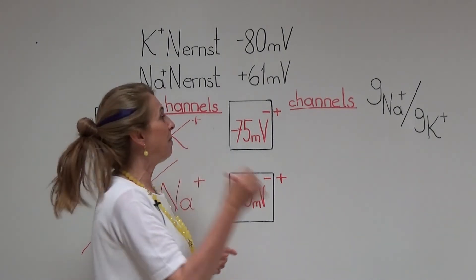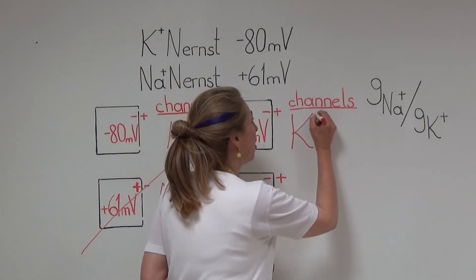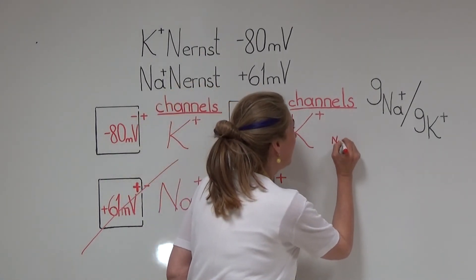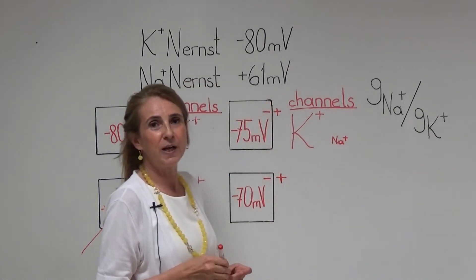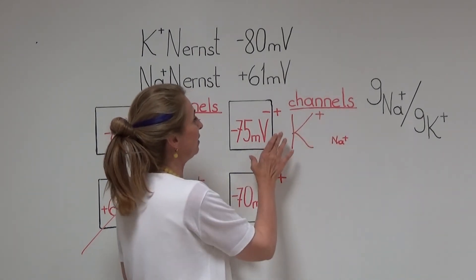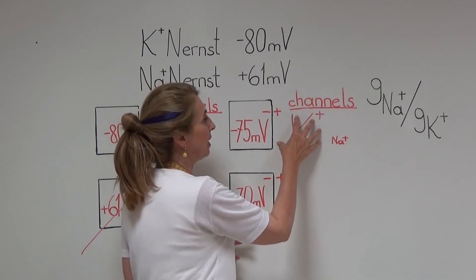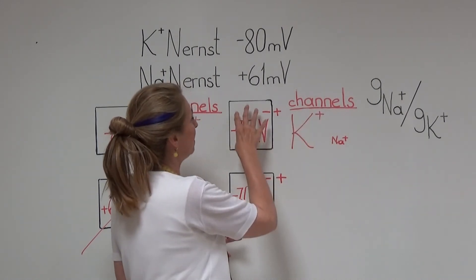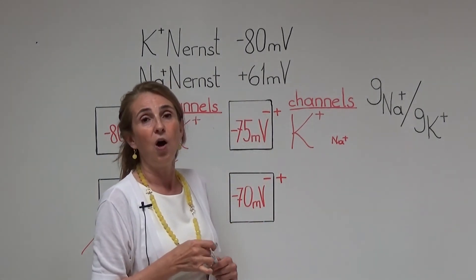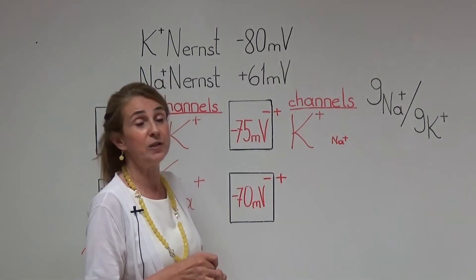There are many open potassium channels and a few open sodium channels on the membrane of this cell. Each ion tries to pull the resting membrane potential towards its own Nernst potential, but because potassium has a greater number of ion channels, the resting membrane potential is closer to the Nernst potential of potassium, although it is not equal to it because of the effect of the sodium channels.